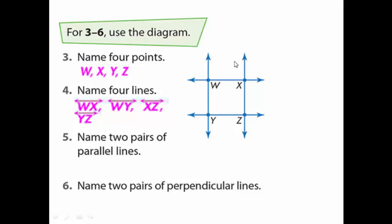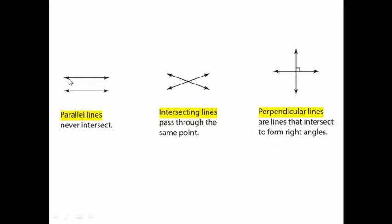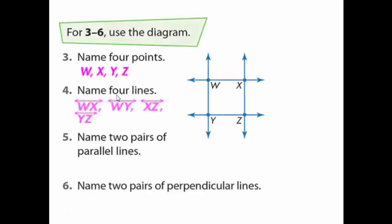Now we've answered four points and four lines. For question five, name two parallel lines. Let's remember where the parallel lines are. Line WY and line XZ — they are parallel. Or line WX and line YZ — they are also parallel.